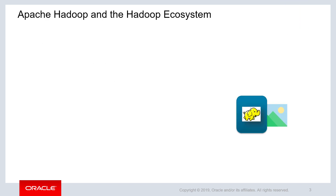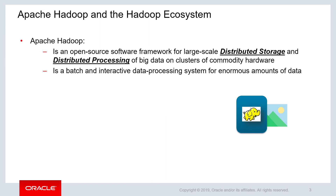Now let's define Apache Hadoop and the Hadoop Ecosystem. Apache Hadoop is an open-source software framework for large-scale distributed storage and distributed processing of big data on clusters of commodity hardware. It is a batch and interactive data processing system for enormous amounts of data.